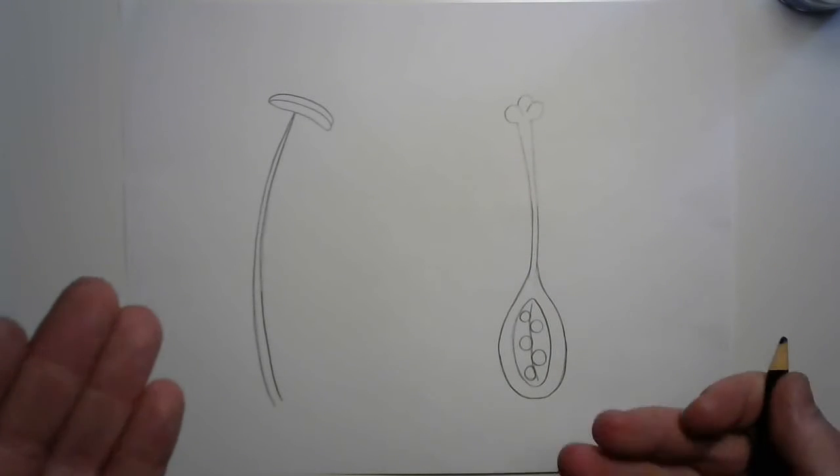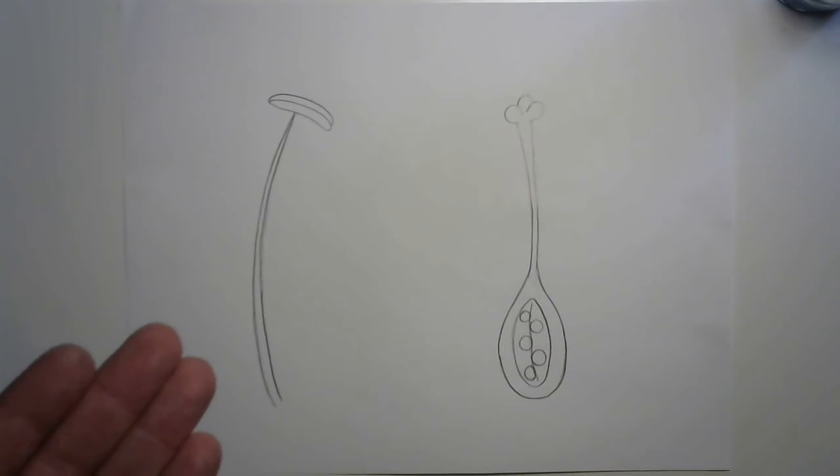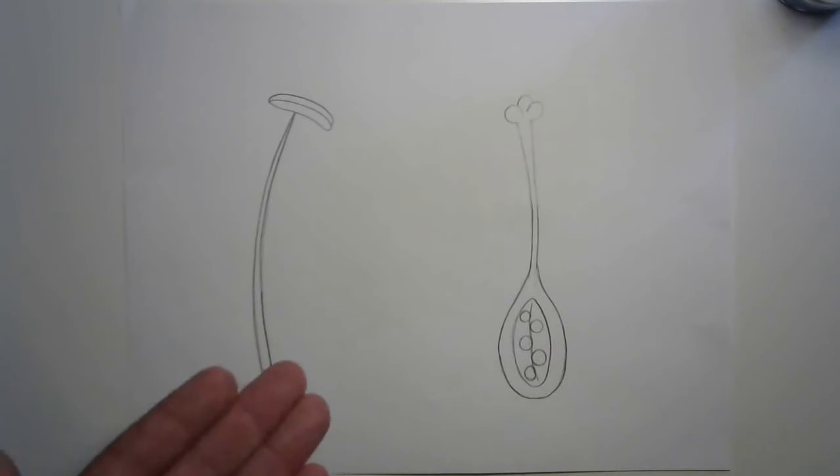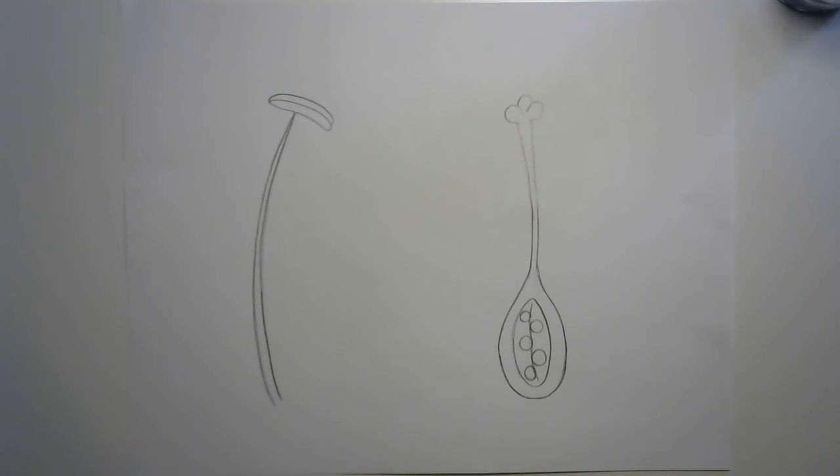Well, let's start first with which is the stamen, and which is the pistil? Remember, the stamen is the male part of the flower. It produces the pollen, and the pistil is the female part of the flower that's going to catch that.